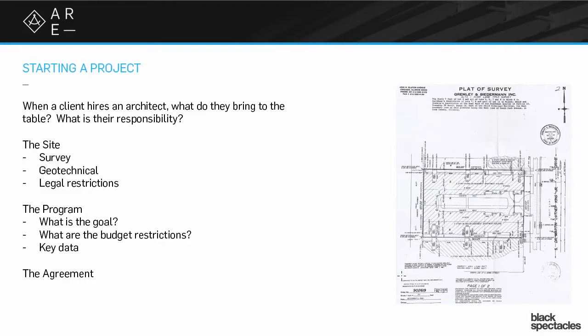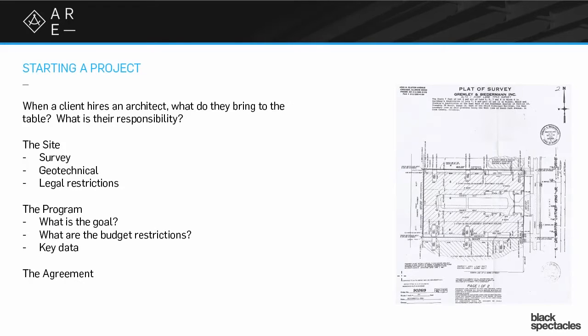The other thing the owner has to bring is the program. Architects feel very much of two minds about this, but the way contracts are set up is that the owner brings a finished program to the architect as part of signing the contract — here's the survey and here's the program. The program is how you base all of your information in the contract. How much is your fee? It's going to be based partly on what kind of project it is, which is based on the program. What are the budget expectations? That's also going to be about the program.